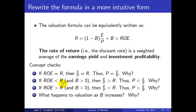If ROE is less than R and B is positive, then for the averaging to work out, E over P must be greater than R, which implies P is less than E over R. In that case, the firm is destroying value by reinvesting at a rate of profit that's too low — not as high as the cost of capital — lowering firm value relative to the benchmark E over R. On the other hand, if ROE is greater than R and B is greater than zero, then E over P must be less than R, and the price is greater than E over R. The firm has profitable investment opportunities, which allow it to generate value for shareholders exceeding current earnings divided by R.